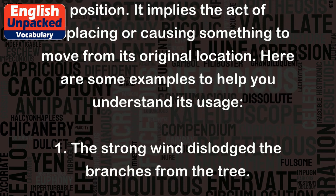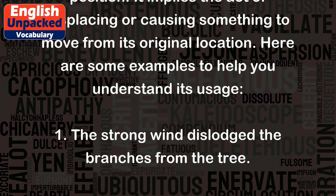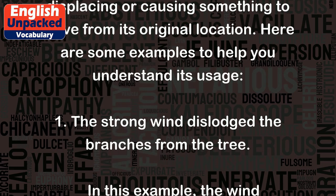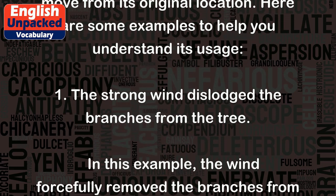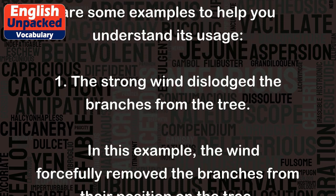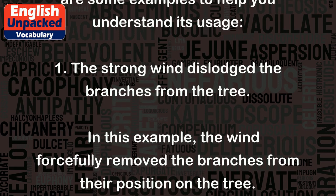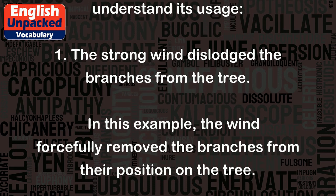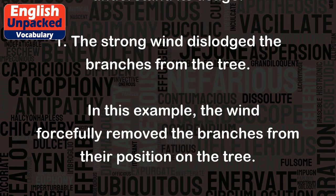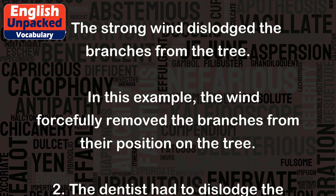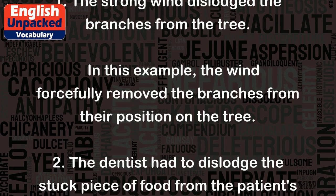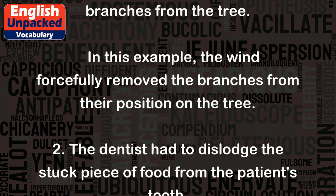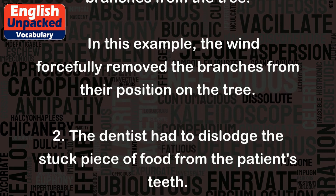Here are some examples to help you understand its usage. 1. The strong wind dislodged the branches from the tree. In this example, the wind forcefully removed the branches from their position on the tree.